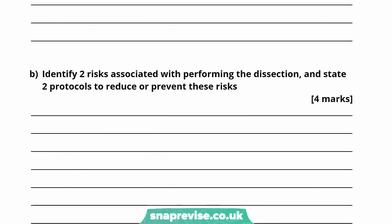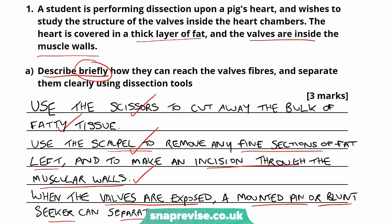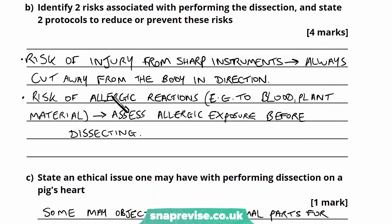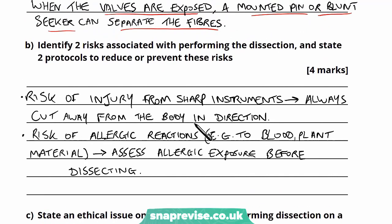Moving on to Part B: identify two risks associated with performing the dissection and state two protocols to reduce or prevent these risks. With any practical, it's a good idea to know the risks that could happen — think laterally through each stage of the process, what could happen and what would you do to prevent it. The first risk I've identified is injury from sharp instruments, such as the scalpel or the scissors. A protocol for this would be to always cut away from the body in direction.